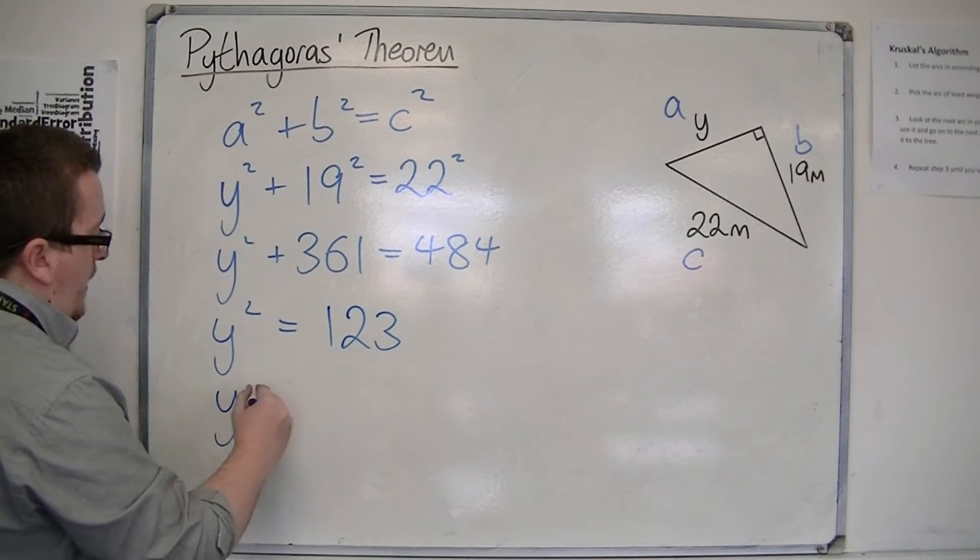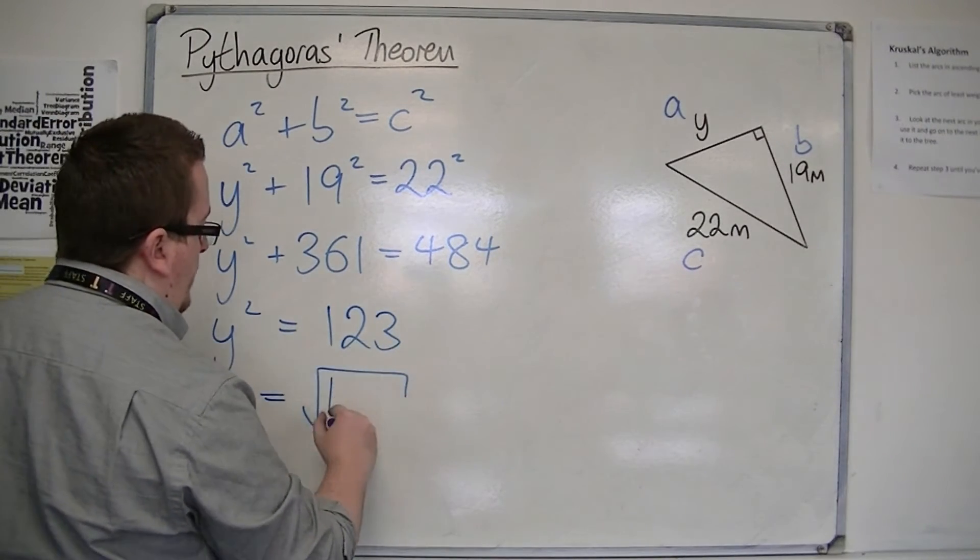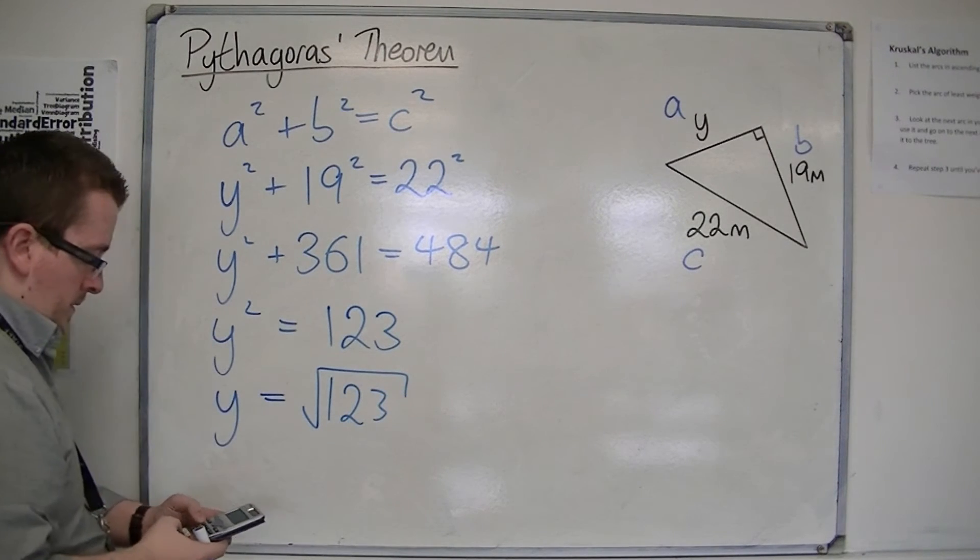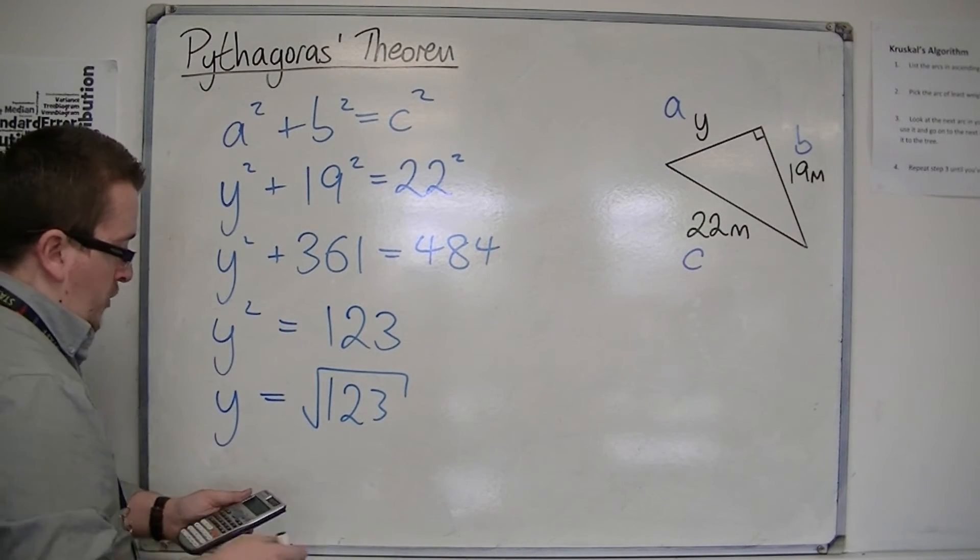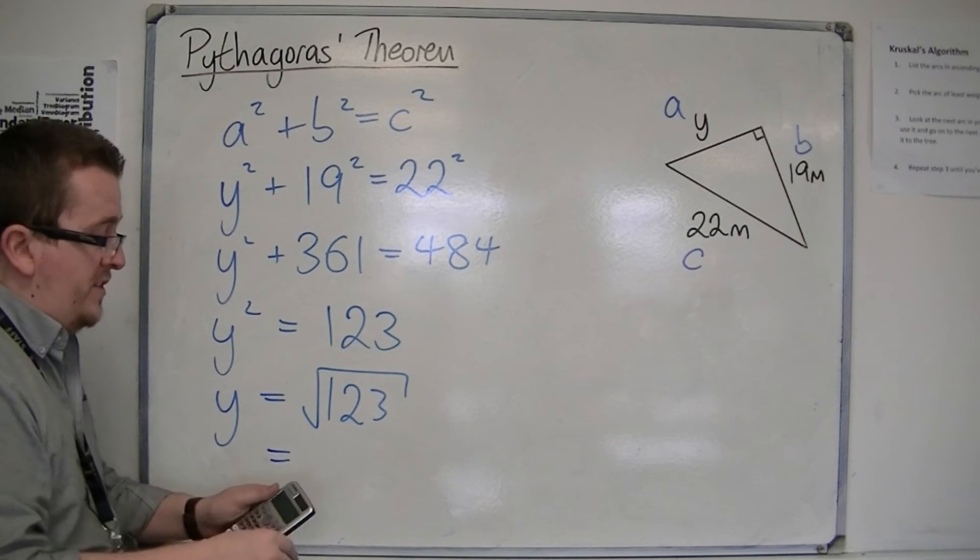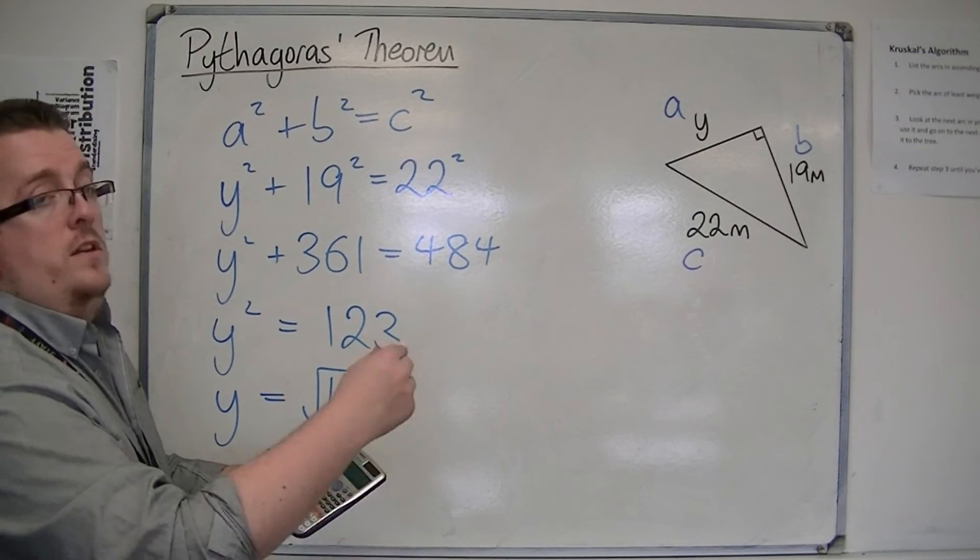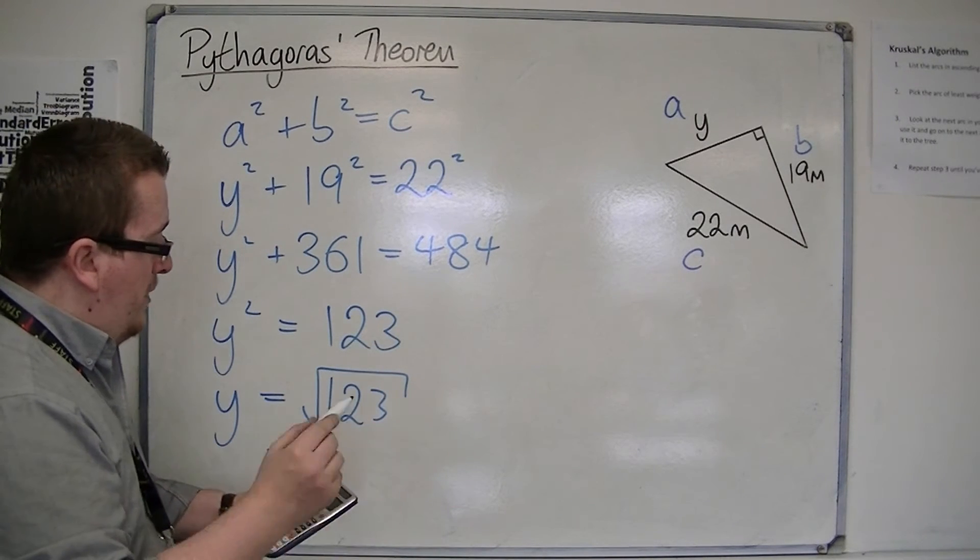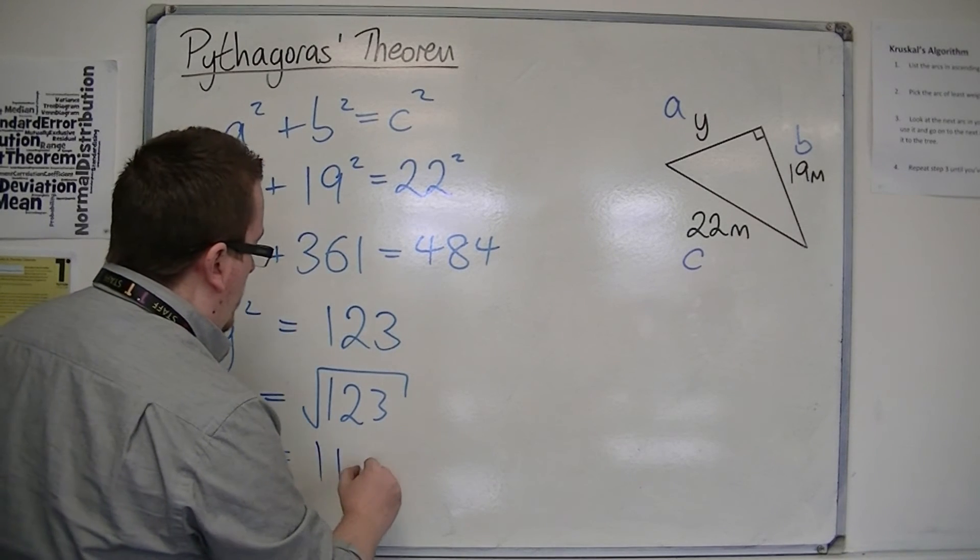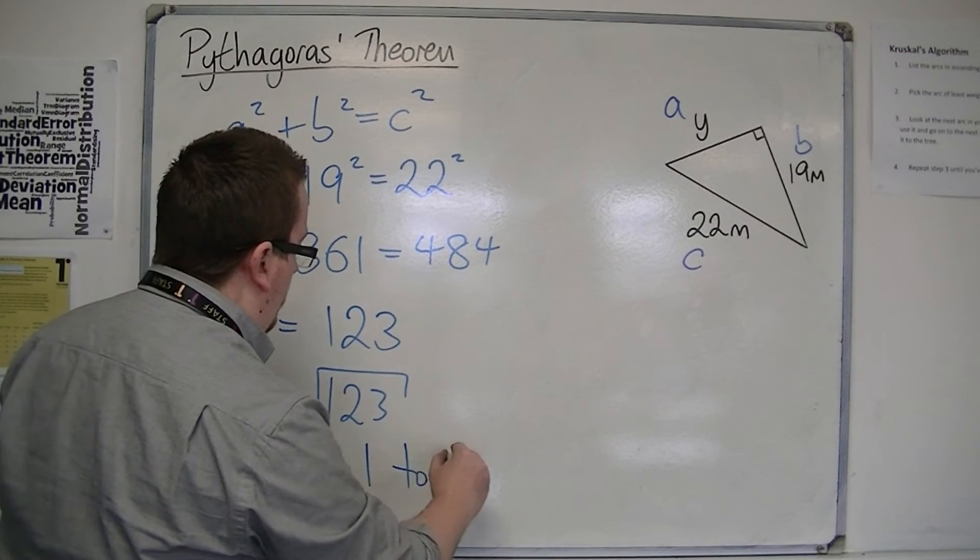So y is the square root of 123, which is equal to 11.09053651, so 11.1 to one decimal place.